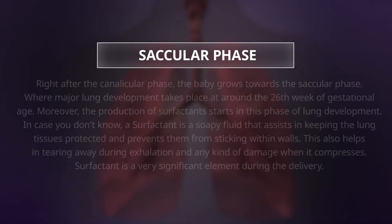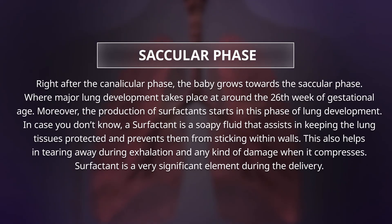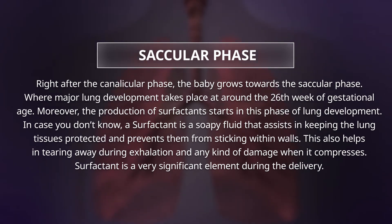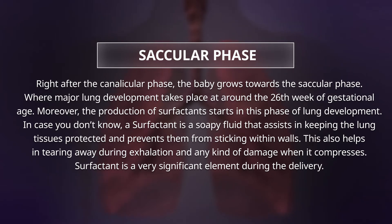Right after the canalicular phase, the baby grows towards the saccular phase, where major lung development takes place at around the 26th week of gestational age. Moreover, the production of surfactant starts in this phase of lung development. A surfactant is a soapy fluid that assists in keeping the lung tissues protected and prevents them from sticking within walls. This also helps in tearing away exhalation and any kind of damage when it compresses. Surfactant is a very significant element during the delivery.